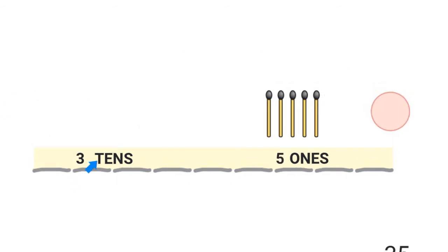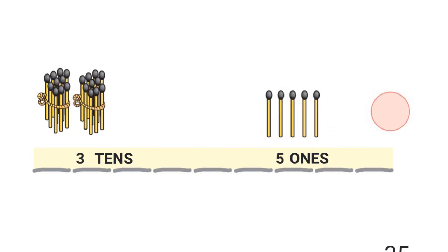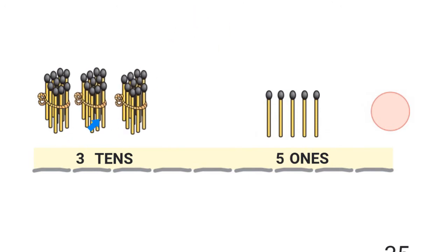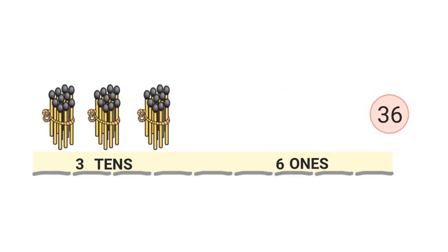I have 3 tens. Let me draw 3 tens: 1, 2, and 3 — 3 bundles of 10. I know that 3 tens are 30. And I also have 1, 2, 3, 4, 5 — that's 5 ones. So 30 and 5 is 35. I have 35 matchsticks in all.